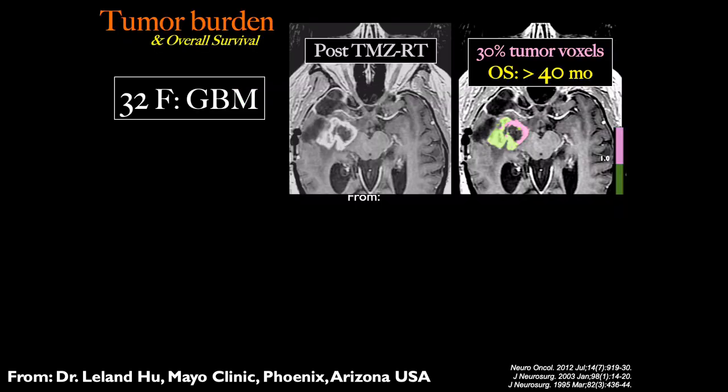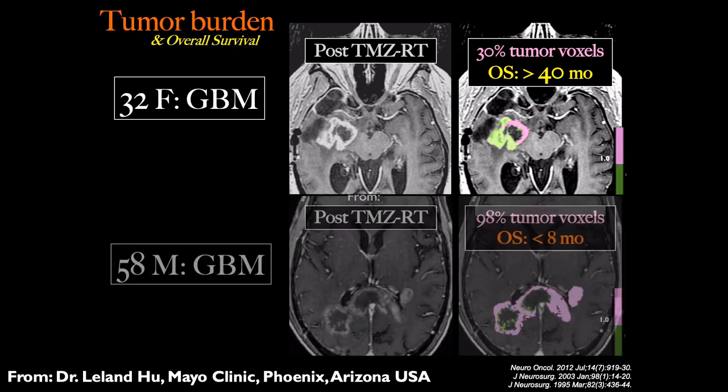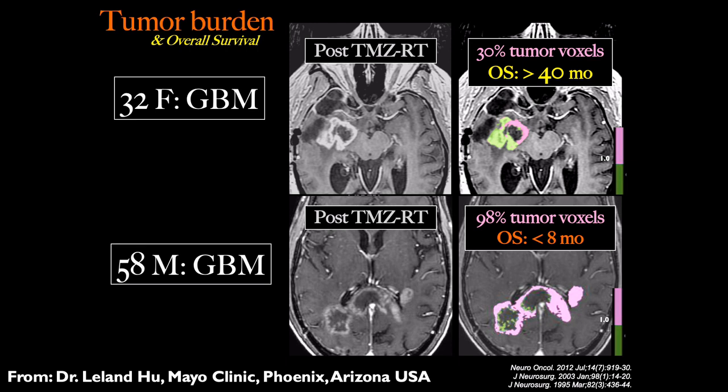Here's another example of using fractional tumor burden. This same patient with 30% tumor voxels had an overall survival greater than 40 months. For another patient, their FTB showed that 98% of that enhancing lesion was tumor versus treatment effect, and their overall survival was much less. What these examples show is that fractional tumor burden is giving clinically relevant, important prognostic information that cannot otherwise be obtained from standard imaging.